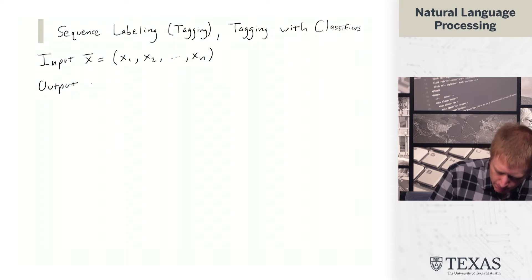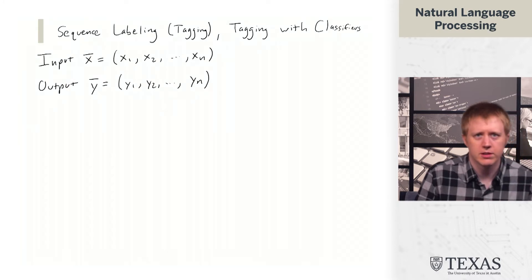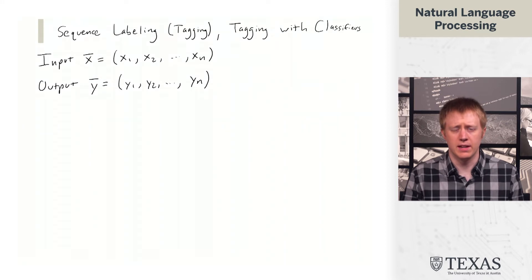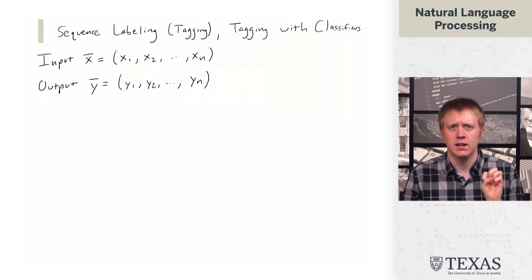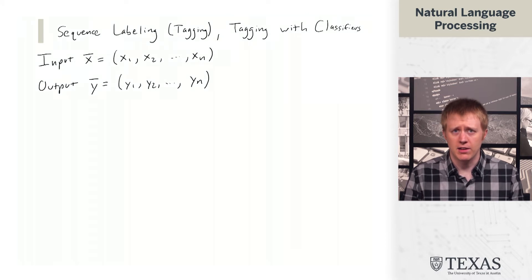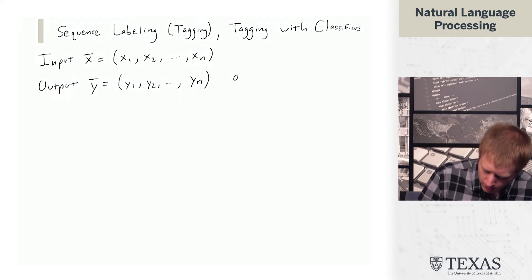And our output y is going to be the same length as the input now. So previously we always thought about y as some kind of binary or multi-class prediction, some single discrete label associated with a document or sentence. Now we're going to think about it as one prediction per word.